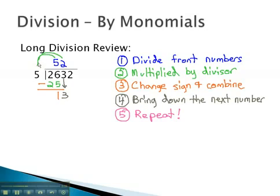We then multiply the 2 by the divisor 5 and get 10. We change the sign on the 10 and combine to get 3. We then bring down the next number, or 2, and repeat the process.